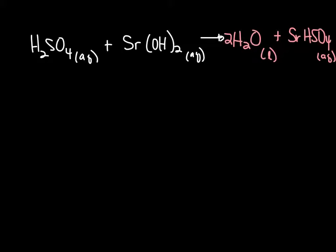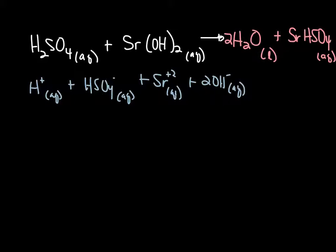Complete ionic is going to look like this. We're going to get H positive, or a hydrogen ion, plus an HSO4 minus ion, plus strontium ion. Sorry, that's AQ, it's hard to read, plus 2 hydroxide ions. Sorry, I just realized that there should be a 2 here and a 2 there. Okay, so back to this, and then on the other side, we're going to get 2 liquid water molecules, because that's our driving force, plus our strontium ions, plus our 2 HSO4 ions, which are also aqueous.